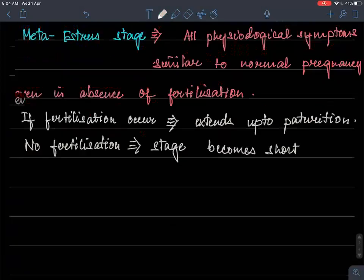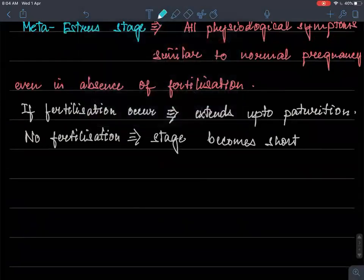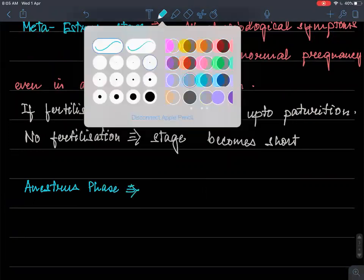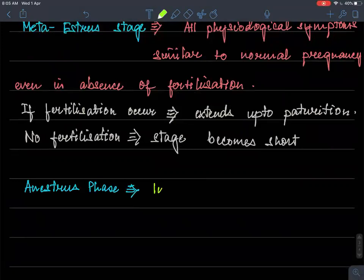And let's move on to the last phase which is actually in between inter phase stage of two estrus cycles. So anestrus or diestrus phase is the last phase where we can see that it is an inter phase of two estrus cycle and thus is also called as diestrus phase.